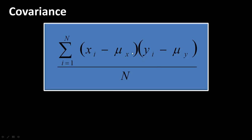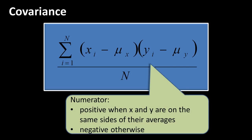The formula for covariance for the population is: the sum of (xi minus μx) times (yi minus μy), divided by n. The first term shows how far a particular x value is from the mean; the second shows how far a given y value is from the mean. The numerator is positive when both x and y are on the same side of their respective averages.